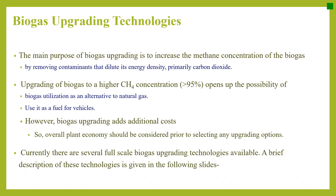Biogas upgrading technologies. The main purpose of biogas upgrading is to increase the methane concentration of biogas by removing contaminants that dilute its energy density, primarily carbon dioxide. Upgrading biogas to a CH4 concentration greater than 95% opens up the possibility of biogas utilization as an alternative to natural gas. However, biogas upgrading adds additional cost, so overall plant economy should be considered prior to selecting an upgrading option. Currently, several full-scale biogas upgrading technologies are available.